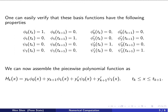Now we can assemble the piecewise polynomial function using the basis functions in a standard way. We multiply each basis function by the value it represents and add them all up in a linear combination. So phi_0 is multiplied by y_k, phi_1 by y_{k+1}, psi_0 by y'_k, and psi_1 by y'_{k+1}. Adding them all up forms a cubic polynomial for the interval from t_k to t_{k+1}. This is the polynomial to use when the first derivatives are given at all knots.